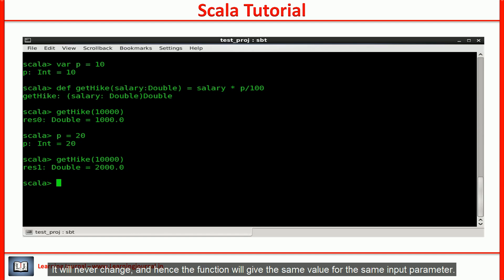It will never change and hence the function will give the same value for the same input parameter. That would make the closure referentially transparent and hence pure. So, a closure may be pure or impure depending on the type of the free variable.